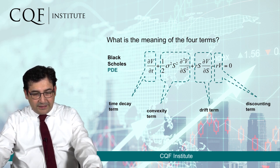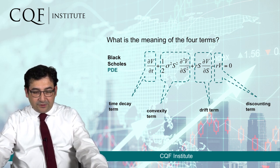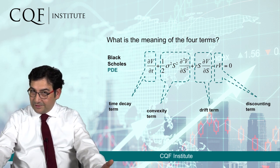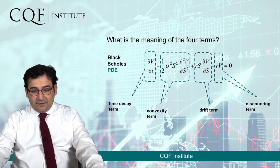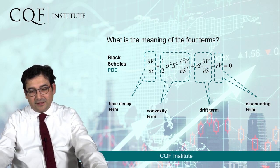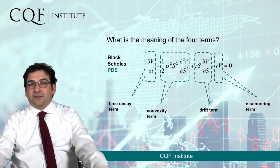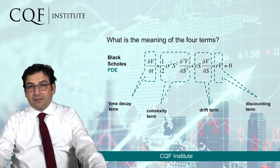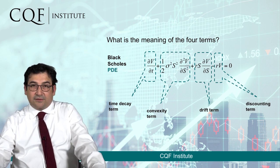In terms of the Black-Scholes PDE, the first term is the time decay — that is, the partial derivative with respect to time. The second term represents the convexity, which is the second derivative, associated with the gamma. The third term represents the drift, which is the first partial derivative with respect to stock price. And finally, we have a discounting term, in which the value of capital B — representing the financial contract — is subtracted from the whole.